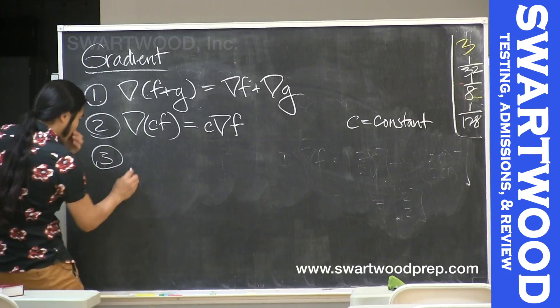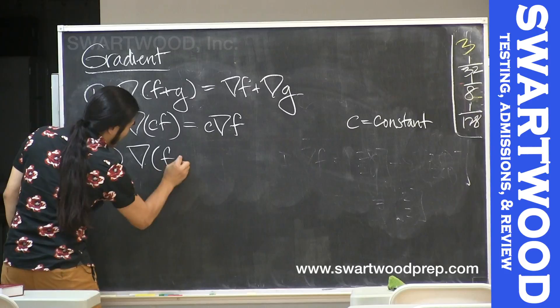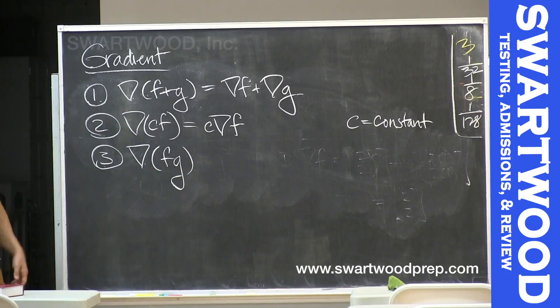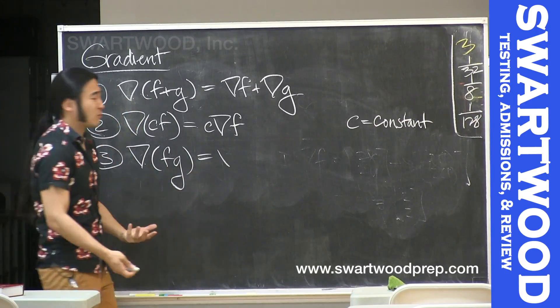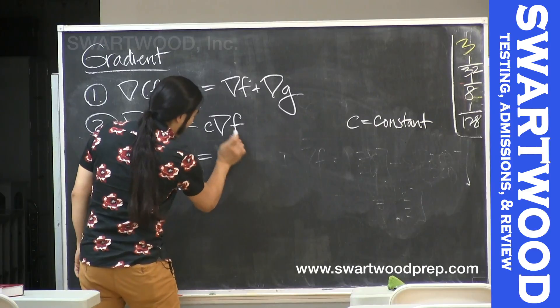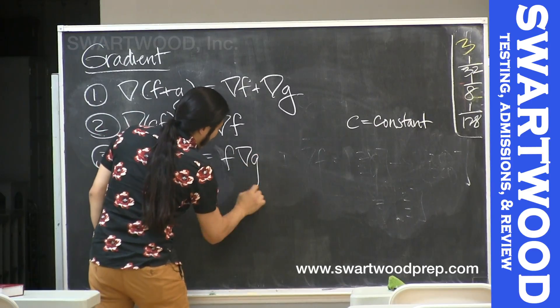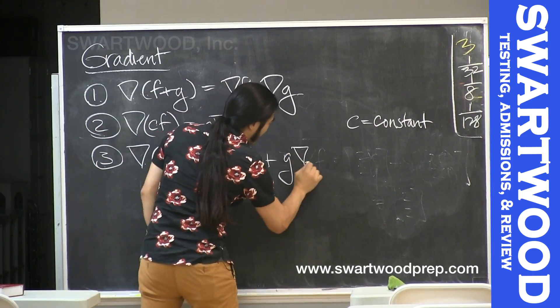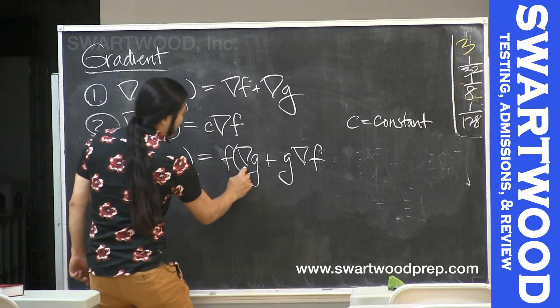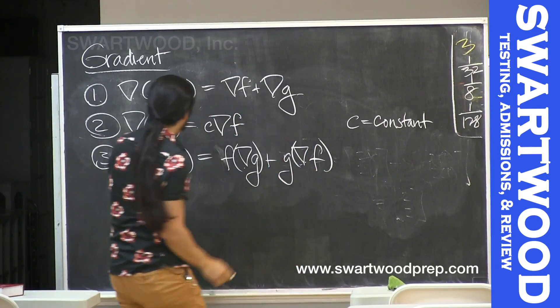But let's look at number three. Let's actually take two functions, f and g. So you've got the gradient of f times g. You're going to get the product rule all over again. So it's basically the first times the gradient of the second, plus the second times the gradient of the first.